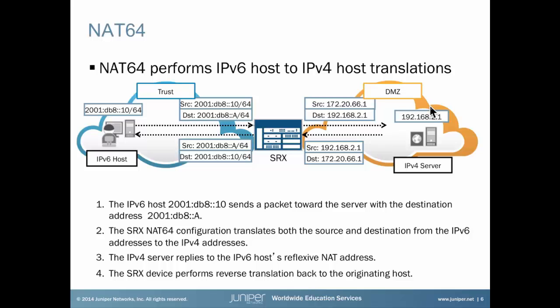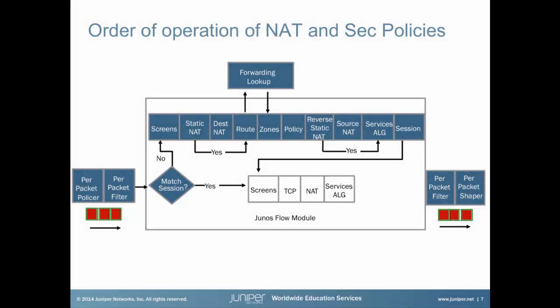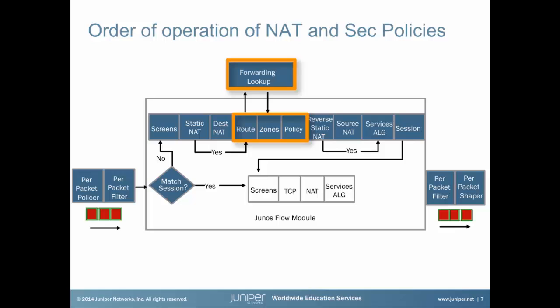The IPv4 server replies to the IPv6 host reflexive NAT IP address. The SRX device performs then reverse translation back to the originating host. Please remember the order: the first packet of a flow is handled by the flow module. Static NAT and reverse static NAT is handled before destination NAT, forwarding, and policy lookup. Destination NAT is also handled before forwarding, lookup, and policy checking, while only source NAT is done after forwarding, lookup, and security policy checking.